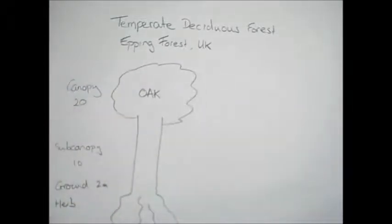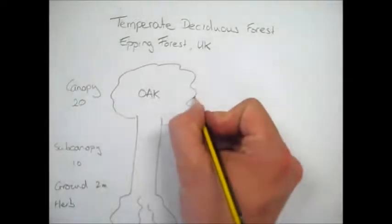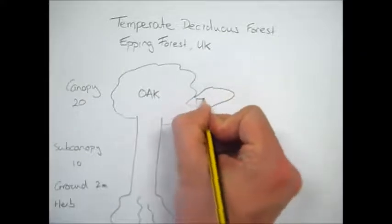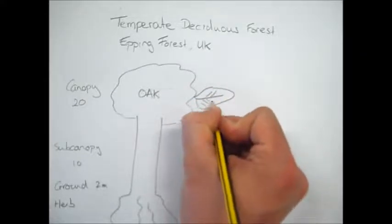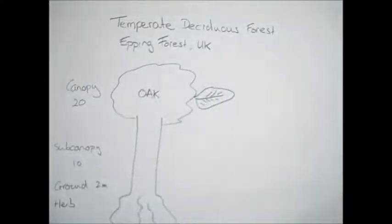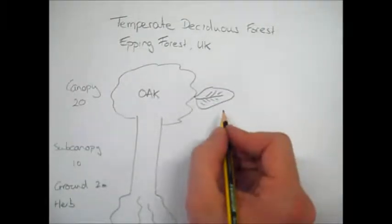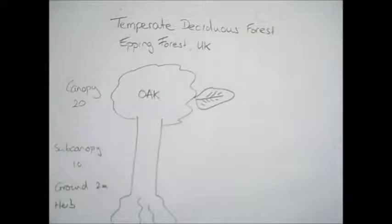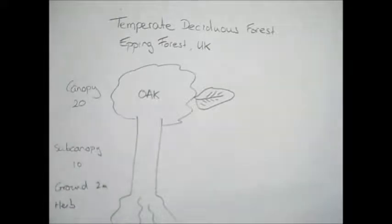Starting from the top, let's look at some of the adaptations. In temperate deciduous woodland, trees have very large, broad leaves and broad branches. This allows them to photosynthesize as much as possible during the short summer months, because during the winter they lose their leaves and are unable to photosynthesize. They need to grow tall with wide branches and broad leaves to maximize photosynthesis during summer.